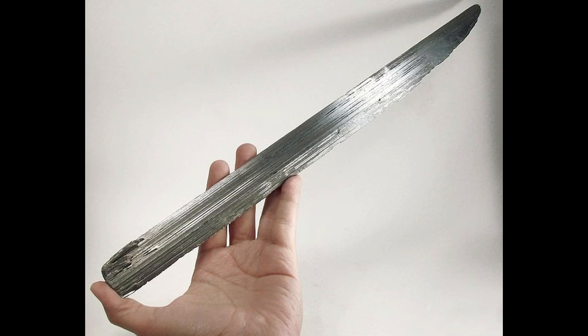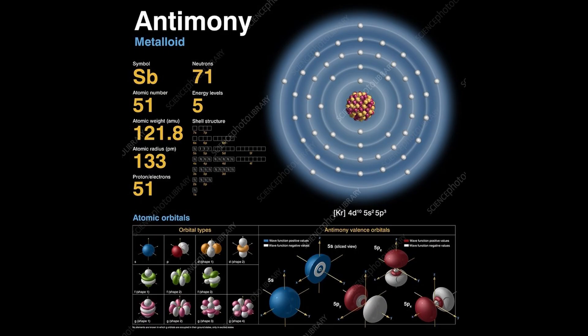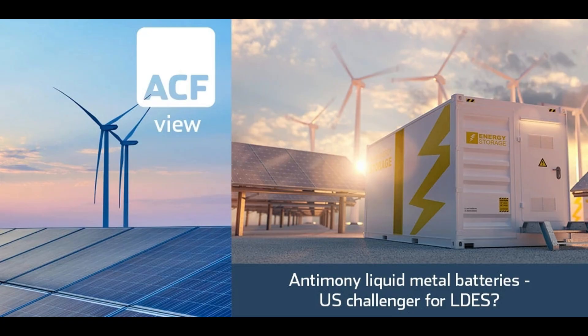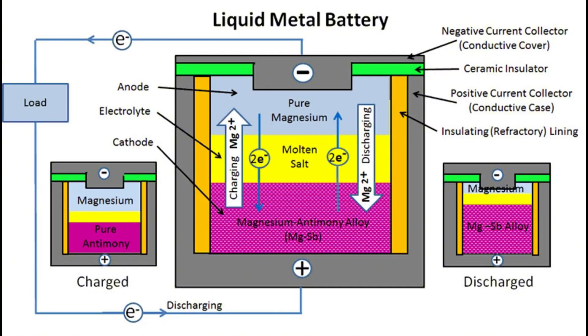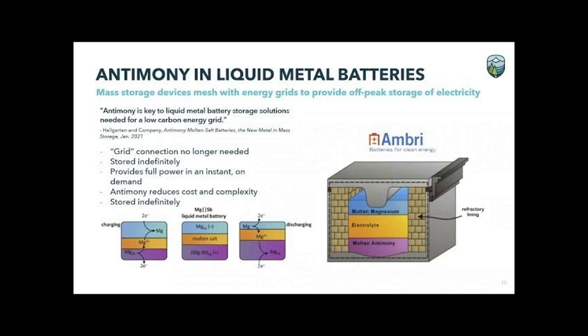Antimony is a bluish-white, lustrous metal that is brittle and crystalline. It is a relatively soft metal, with a Mohs hardness of 3.5. Antimony has a low melting point of 630.7 degrees Celsius and a boiling point of 1,380 degrees Celsius. It is a good conductor of electricity and heat.